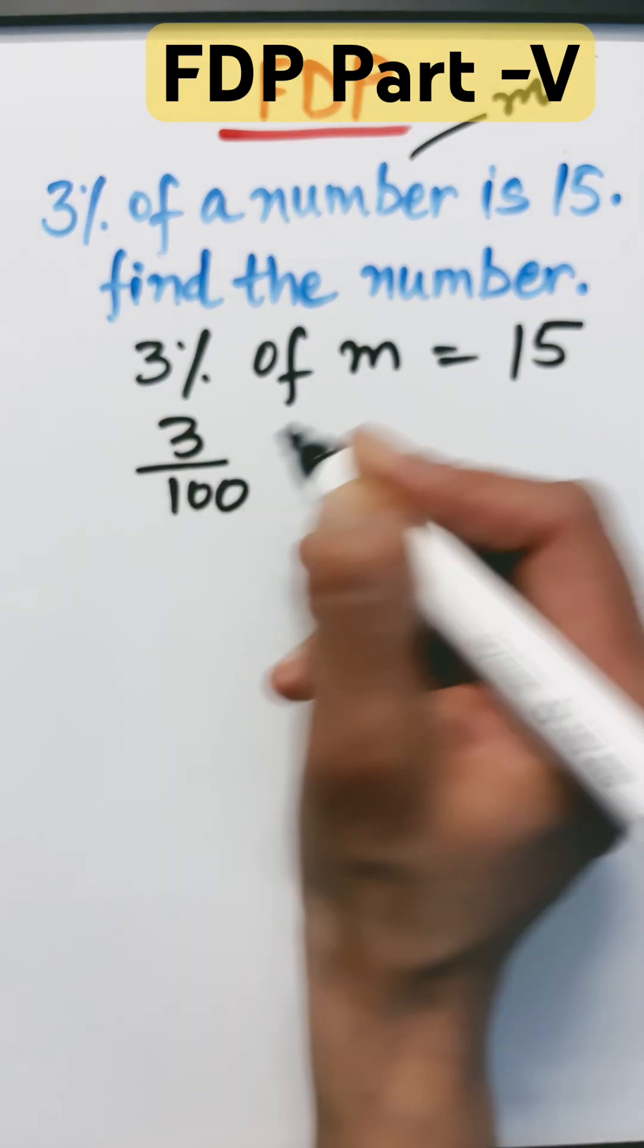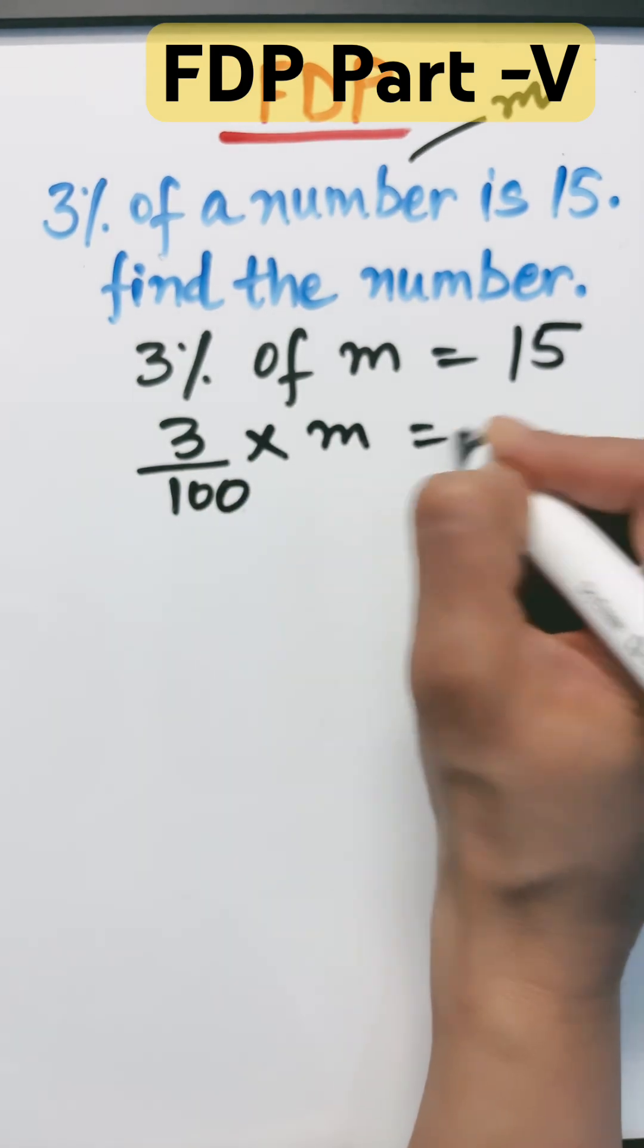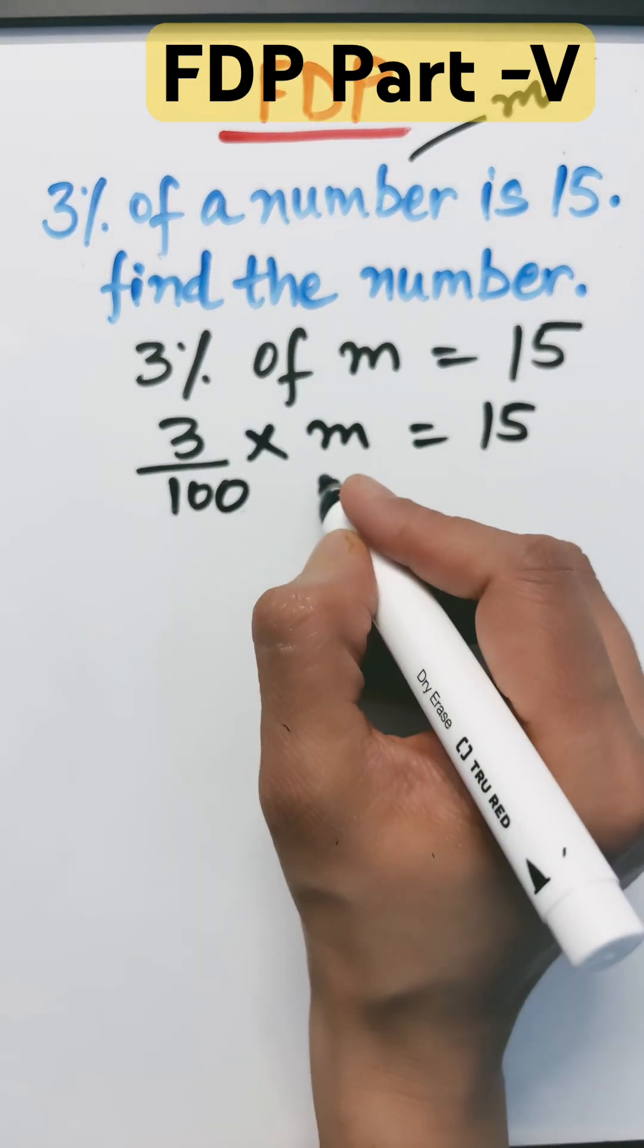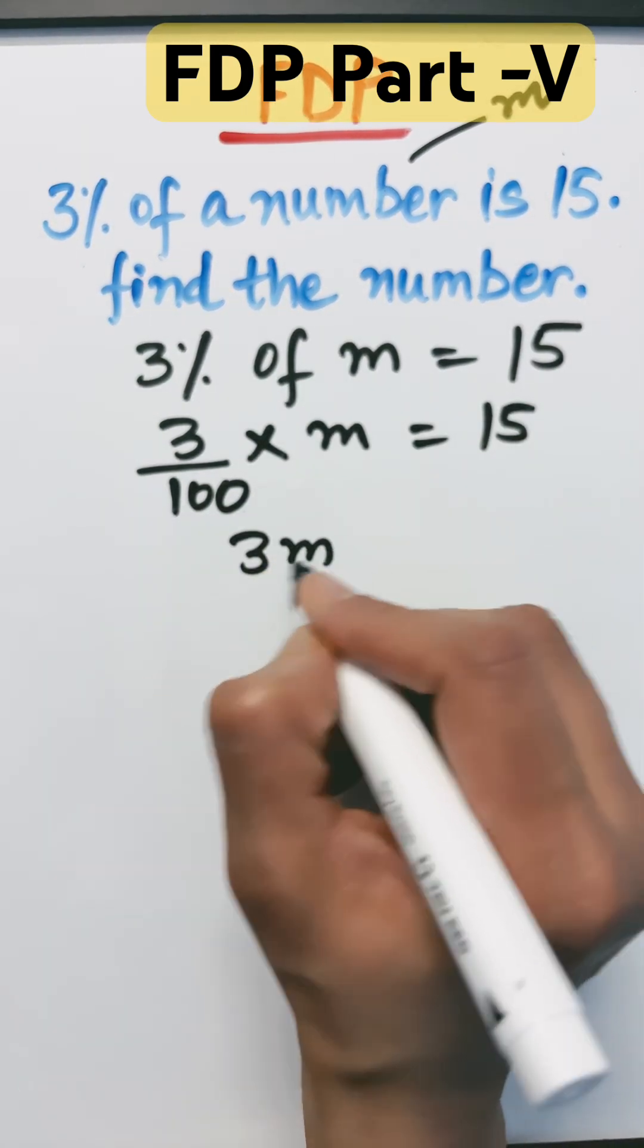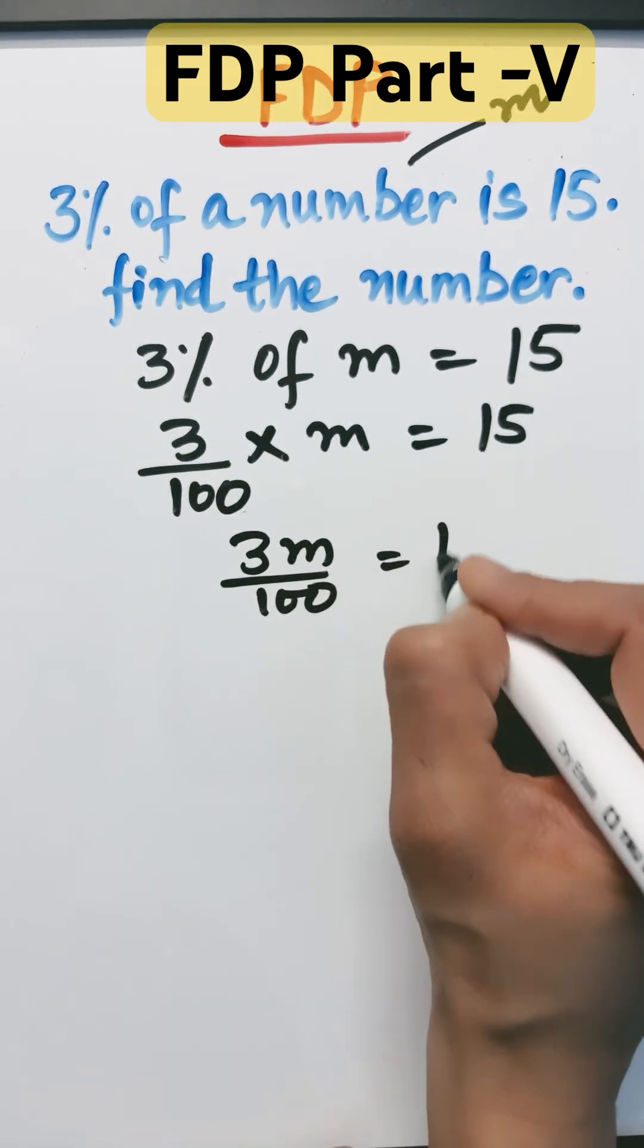3% means 3 over 100 times m equals 15. It's just a linear equation in the variable m. Let's solve it. I will get 3m over 100 equals 15.